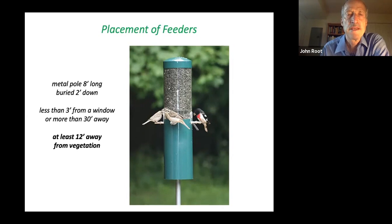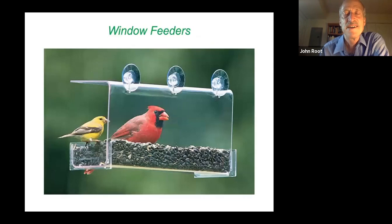If the feeder is at least 12 feet away from vegetation, that minimizes the risk that a predator lurking in the shrubbery will be able to lunge and get a bird. A window feeder might be the best option for many reasons: you can see the birds much more readily, you'll be monitoring it every time you pass and notice whether it needs cleaning, and it's usually out of reach of squirrels and predators.